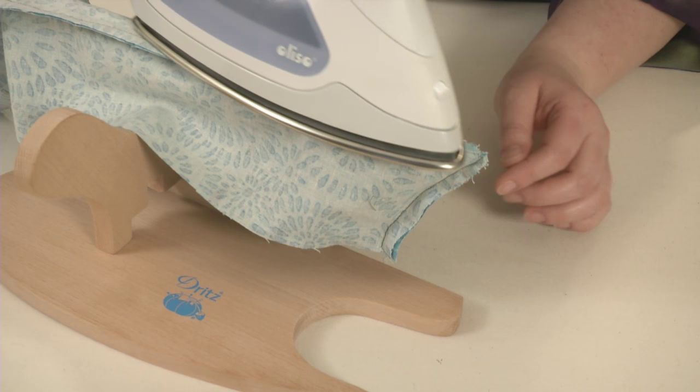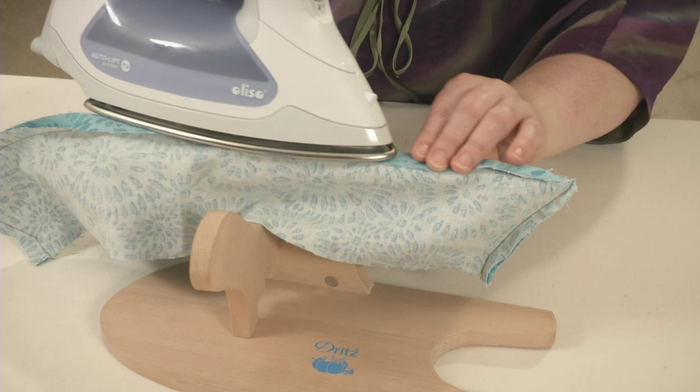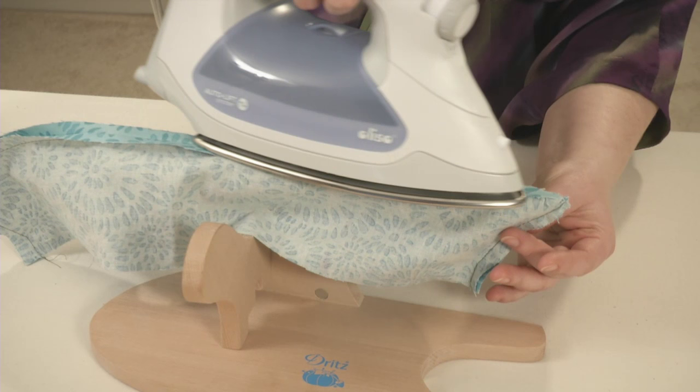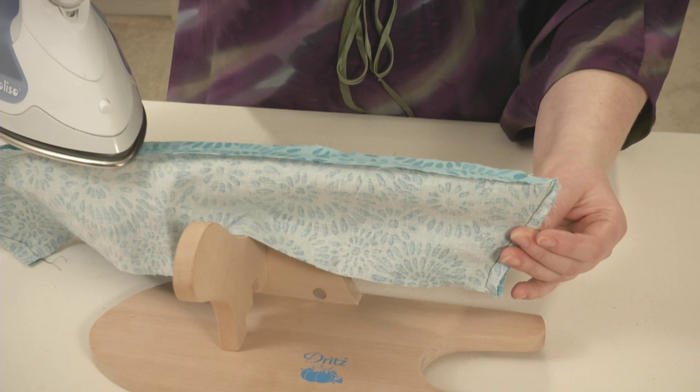The point presser's edge also gives you a nice, straight surface for pressing a longer seam while you're working on a corner, so you don't have to flip the board around too much to complete a single garment section like a collar. You can press the collar's longer seam and its point using the same part of the tailor board.